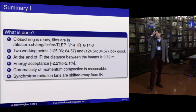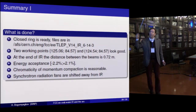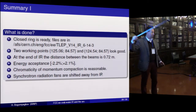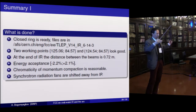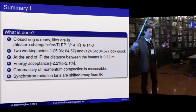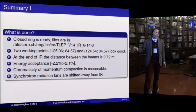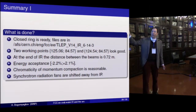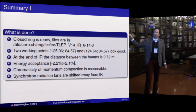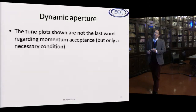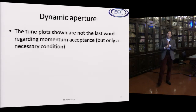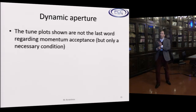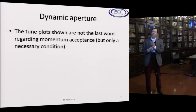His summary was that the closed ring is ready because now we have the interaction region from BINP and the arc from CERN, both married into one design. There are two working points. At the end of the IR, the distance between the beams is 0.7 meters. The energy acceptance is good enough. Chromaticity and momentum compaction are reasonable. Synchrotron radiation fans are shifted away from the IP. Regarding dynamic aperture, the two plots are not the last word — it's a necessary but not sufficient condition.